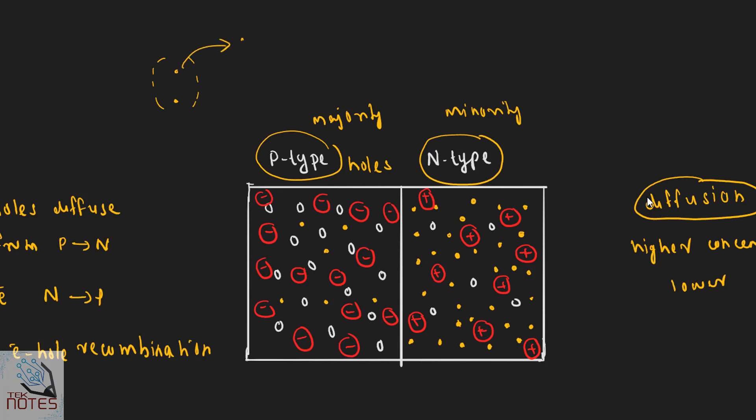Free electrons are released by covalent bond breakage. These valence electrons become conducting free electrons when the covalent bond breaks.